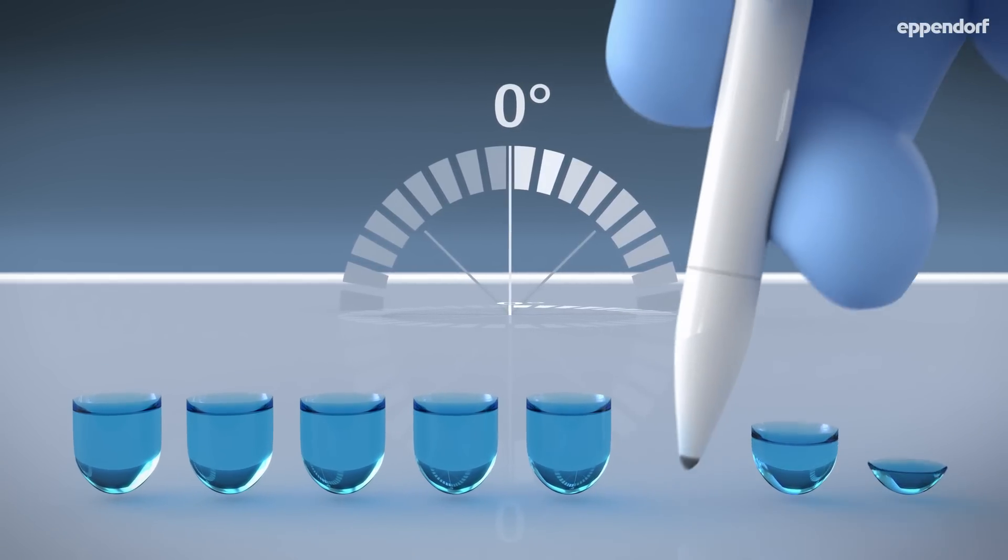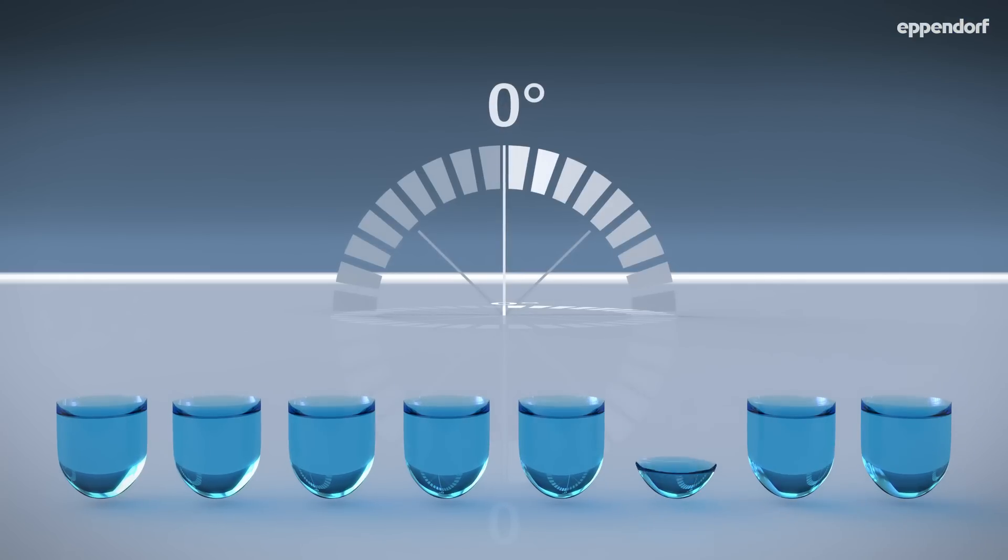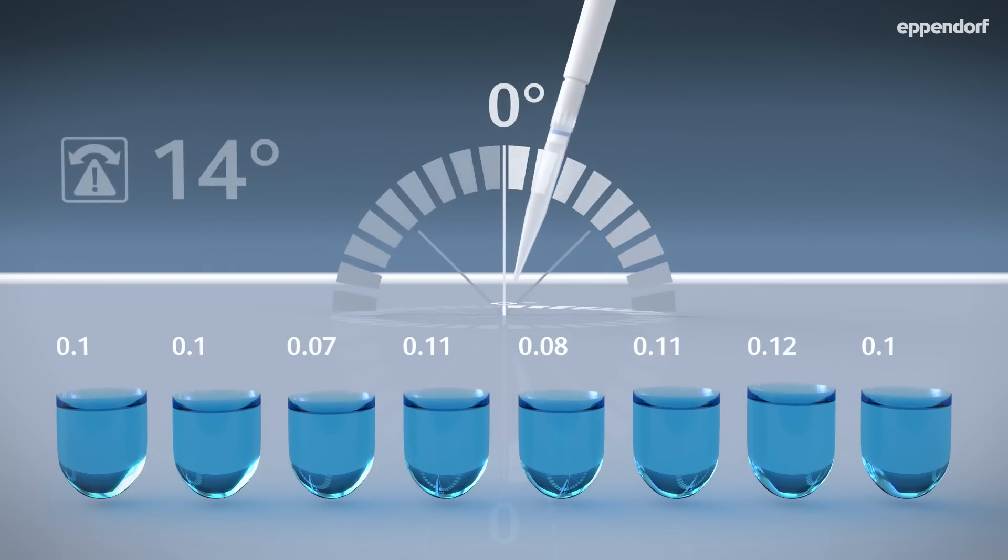Whoops! There we go. The more you tilt the pipette, the more variations you will get in a series of samples, since hydrostatic pressure in the tip changes with the angle.